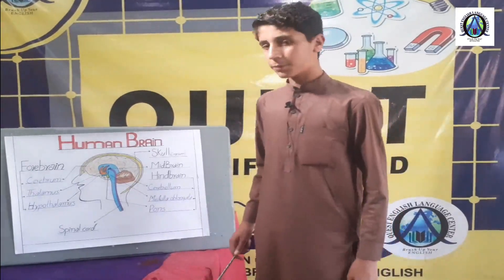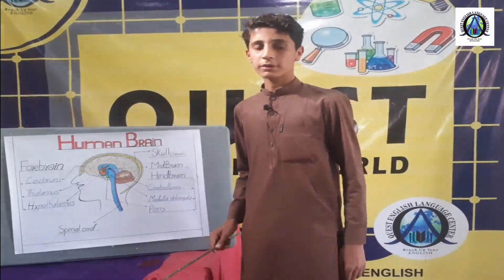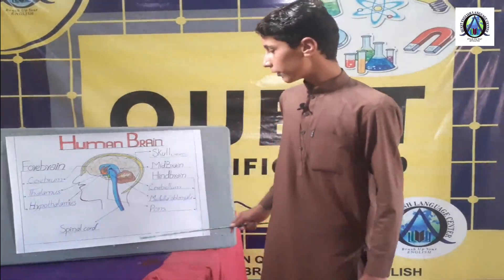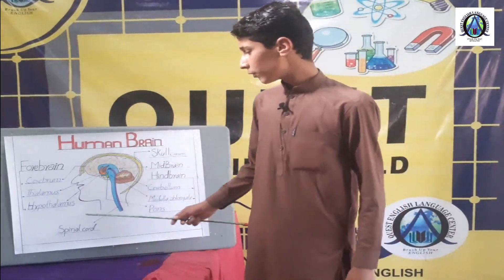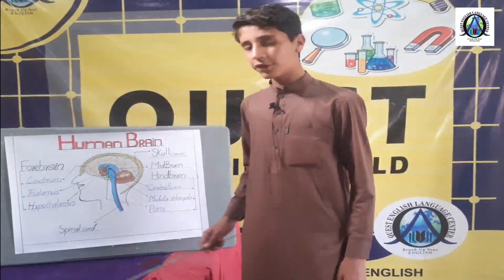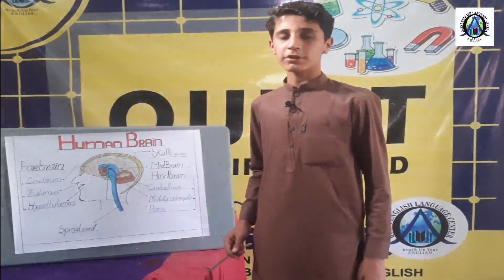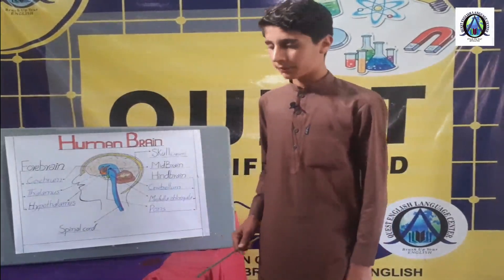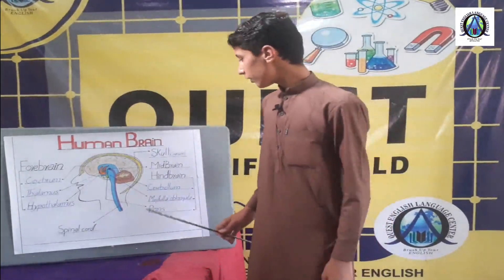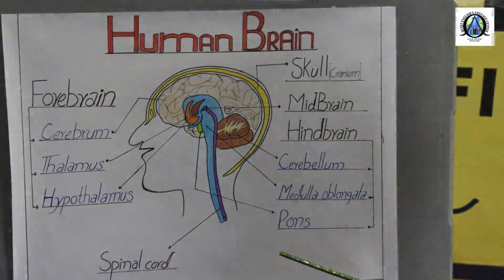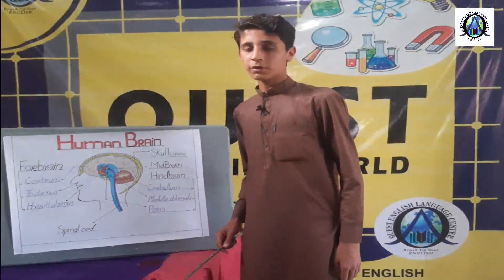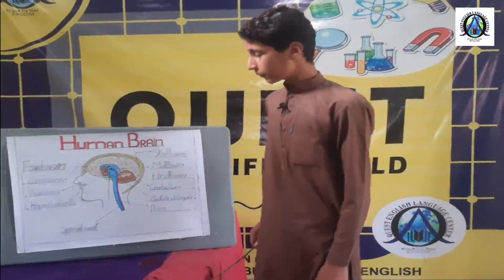Hypothalamus is present below thalamus. It controls body temperature, hunger and thirst etc. The second one is mid brain. The mid brain is located behind the cerebrum and its size is very small in comparison with cerebrum.